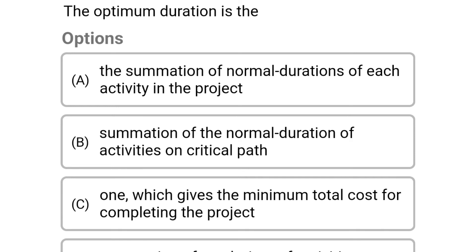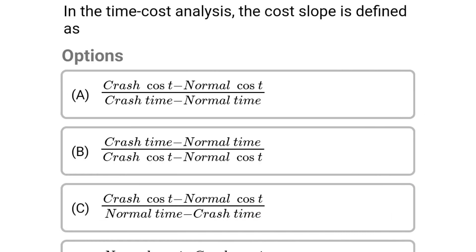Next question: the optimum duration is — option A: the summation of normal duration of each activity in the project, option B: summation of normal duration of activities on the critical path, option C: the one which gives the minimum total cost for completing the project, option D: summation of crash time of activities in the critical path. The correct answer is option C: the one which gives the minimum total cost for completing the project.